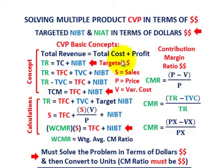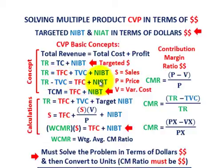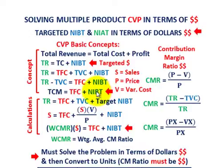Our total revenues equal our total cost, which is our total fixed cost plus our total variable cost, plus some net income before taxes. Rearranging the equation, we subtract total variable cost from both sides, so we end up with total revenues less total variable cost — that difference equals total fixed cost plus net income before taxes. Total revenues less total variable cost is really our total contribution margin, and that equals total fixed cost plus net income before taxes.